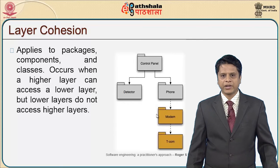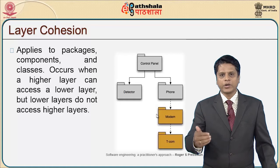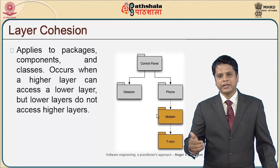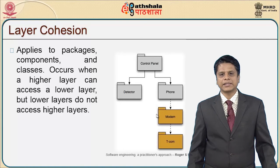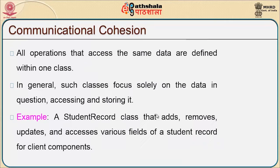For example, I can have a control panel, a detector, and a phone; the phone can in turn access a modem, and it can access telecom devices. The reverse arrow is never indicated. The other type of cohesion is called communicational cohesion, where all operations that access the same data are defined within one class only. Such classes focus solely on the data in question, accessing and storing that data.